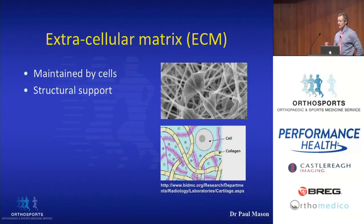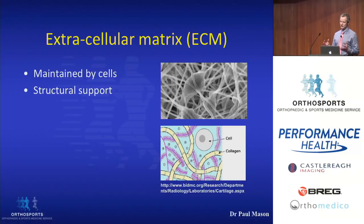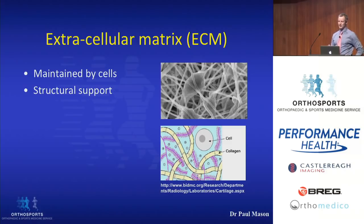To understand why we get these benefits, we need to have a look at the structure of connective tissues. All connective tissues are essentially the same — a cell surrounded by a matrix of collagen fibers called the extracellular matrix. In this example on the bottom right, we can see the cell called a chondrocyte, a cell within articular cartilage, which is surrounded by what is largely a collagen-based matrix.